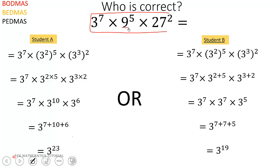First, we must make sure that they change these to base 3 so that all of them will be in base 3. So 9 is the same as 3 squared. Then 27 is the same as 3 cubed.